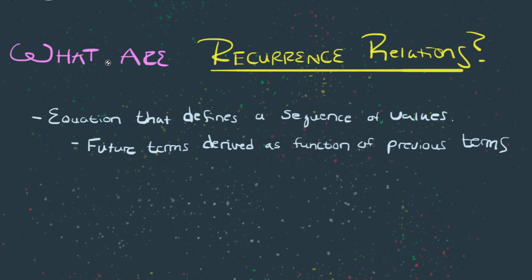Recurrence relations are simply equations that define a sequence of values. The future terms in the equation are derived as a function of the previous terms. And what better example for what this means than looking at something like the Fibonacci sequence.